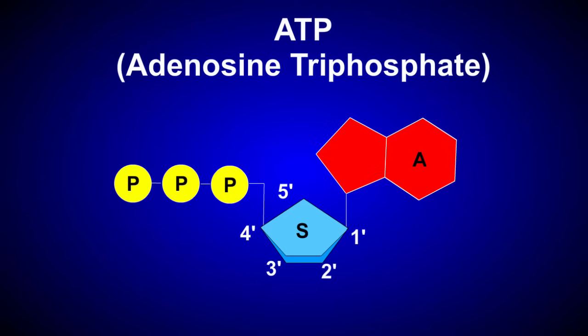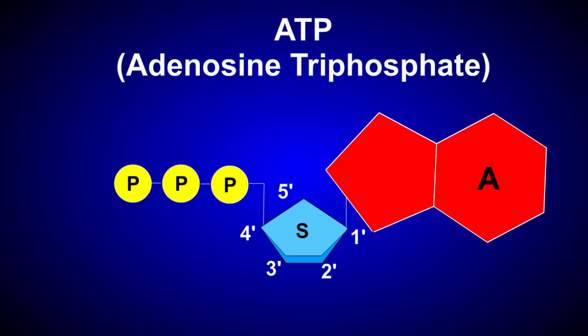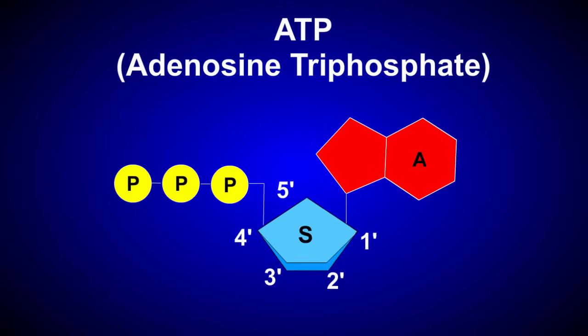ATP is composed of the nitrogenous base adenine, bound to the sugar ribose, just like in RNA. However, three phosphate groups can be added to the molecule. The bonds between the phosphate groups are high-energy bonds. These molecules serve as temporary energy batteries for the cell.